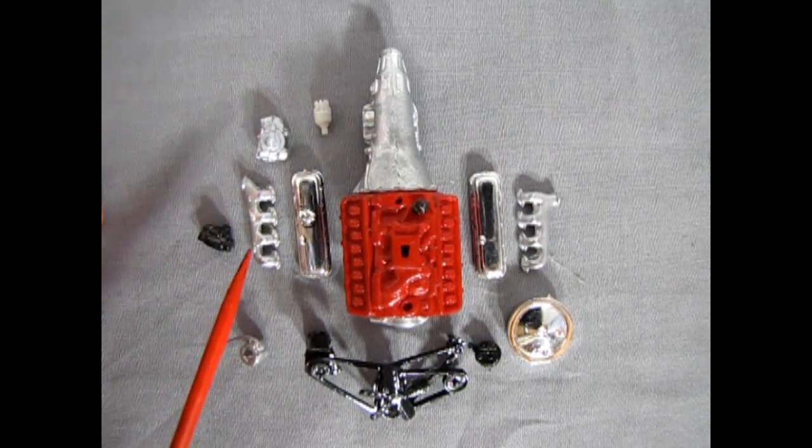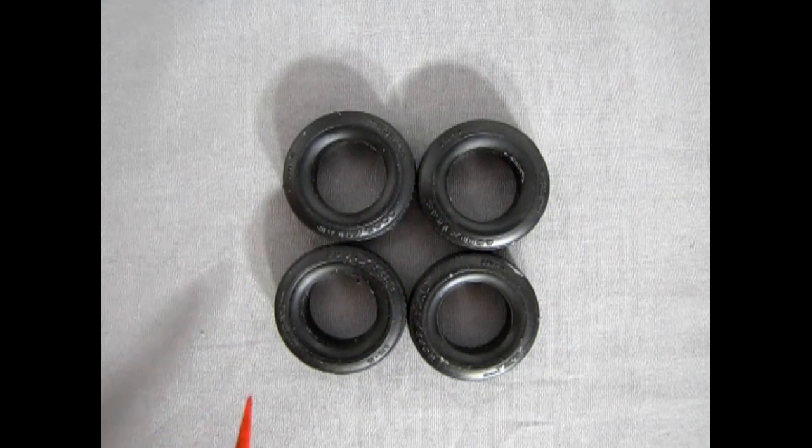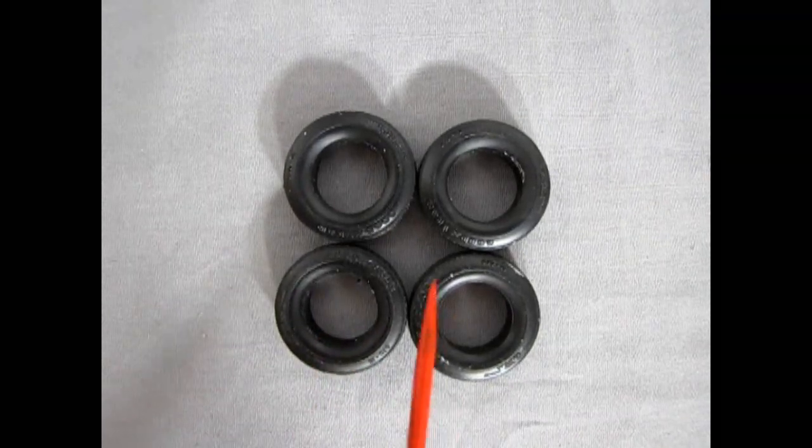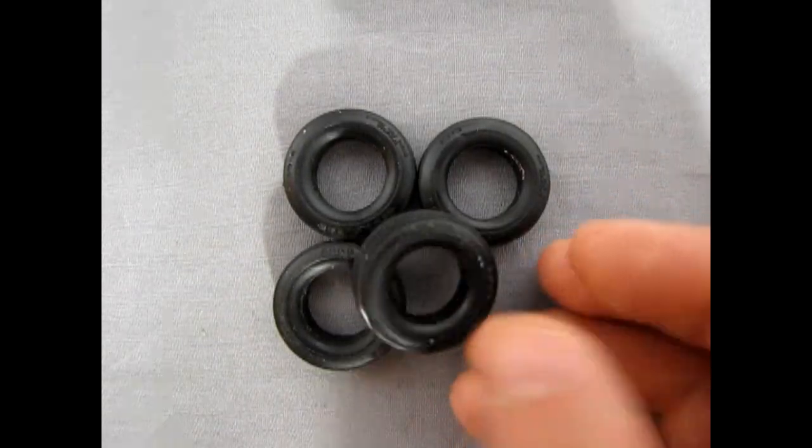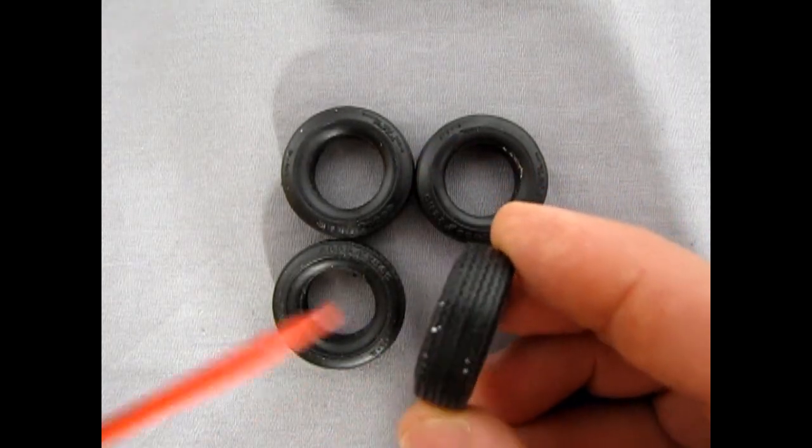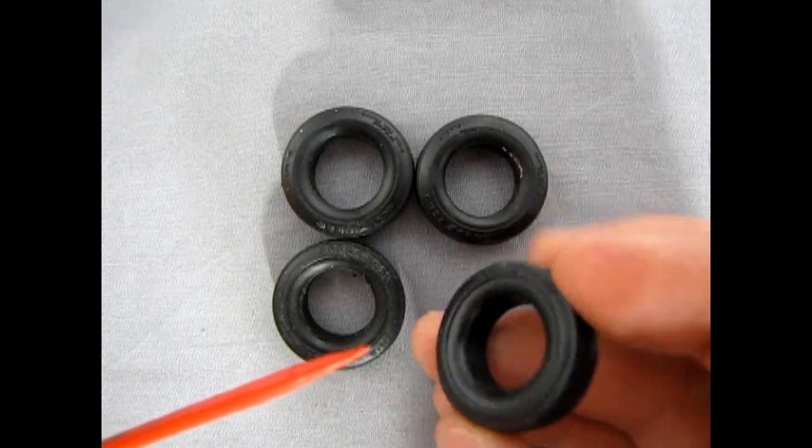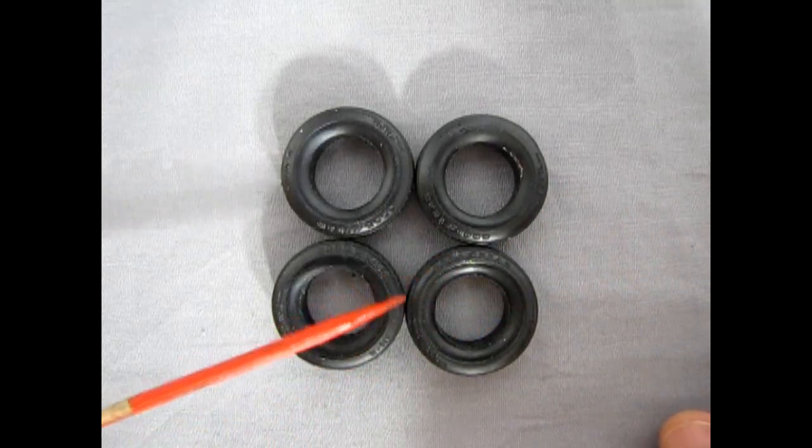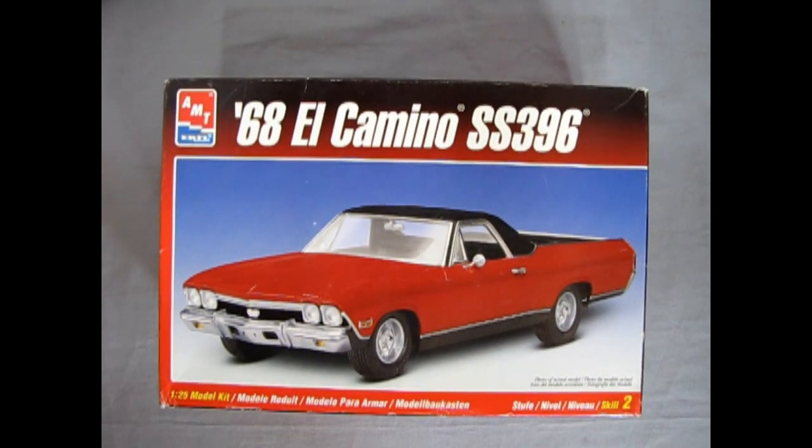And here we have our Goodyear Polyglass G70 15 tires, which have been in earlier AMT kits. These, of course, are bigger, heavier duty tires, which would be perfect for the El Camino. And unfortunately, in the box, there is a lot of silver paint. This was from these tires rubbing against the transmission, I suppose. There is some nice tread pattern in here. All in all, these are really good tires that could be easily painted just to get white Goodyear raised letters on here. And that completes our look at the 1968 Chevrolet El Camino SS 396 by AMT Earl.